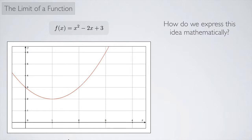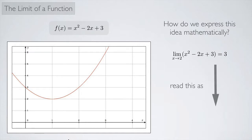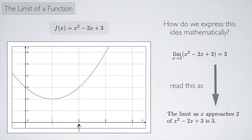The question is: how do we express this idea mathematically? We say the limit as x approaches 2 of x² - 2x + 3 is 3. The notation uses 'lim' — that means limit — then x approaching some number, in this case 2, approached from both the left and the right. Then we write the function, and the value on the right side is the limit value, which is 3.